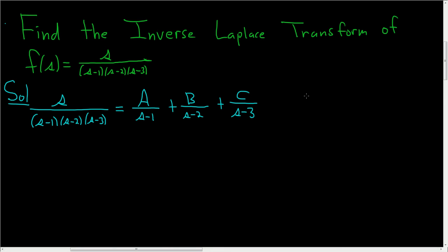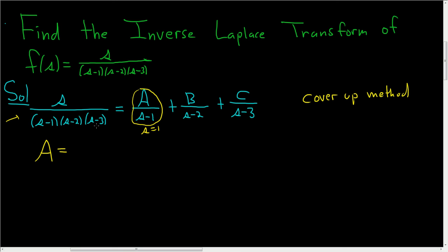There are a couple different ways to do this. We're going to use what's called the cover-up method. To find A, you look at A and ask yourself, what makes the bottom 0? Well, 1 minus 1 is 0, so if S equals 1, that causes a problem. So you go back over here, cover up S minus 1, and plug in 1 everywhere else. So it's 1 over 1 minus 2, and then 1 minus 3. That's why it's called the cover-up method. So S equals 1 makes the bottom 0. Plugging in: 1 minus 2 is negative 1, and 1 minus 3 is negative 2, so we end up with 1 over 2.